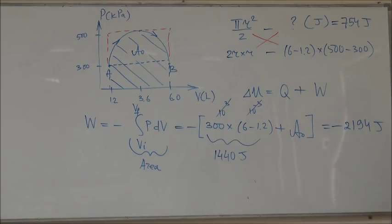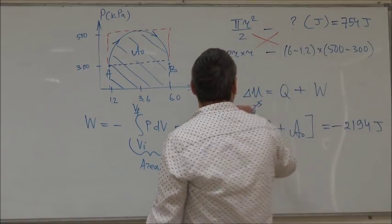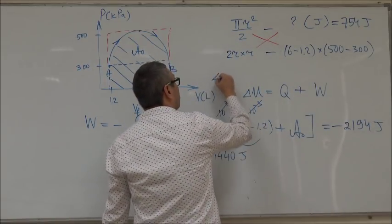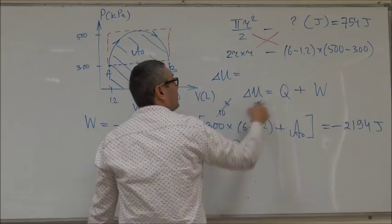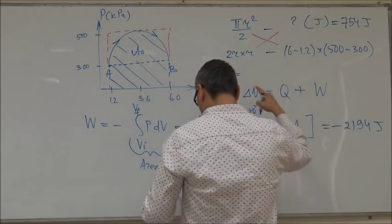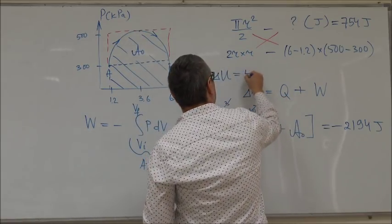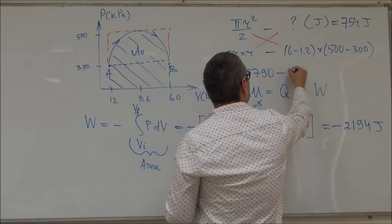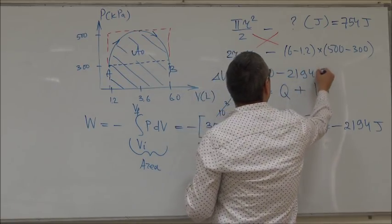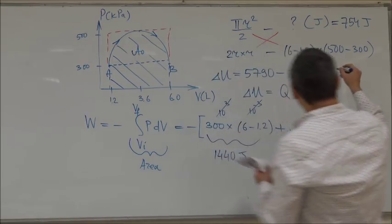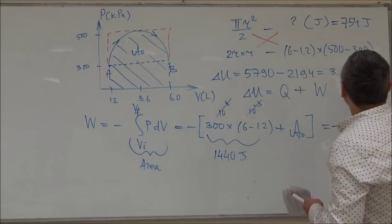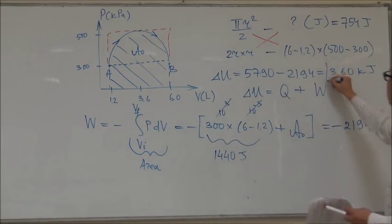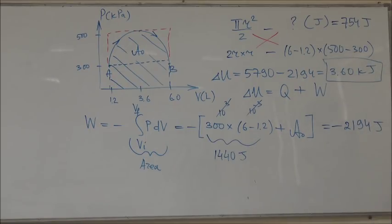So in total then you can say that the change in the internal energy is Q plus W. Q is given, so that's 5790 joules minus this thing, 2194, and you get 3.6 kilojoules. So this is the change in the internal energy.